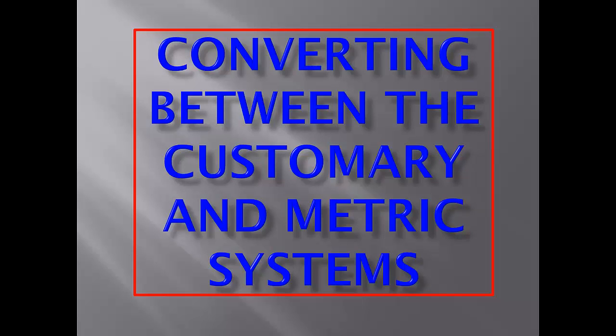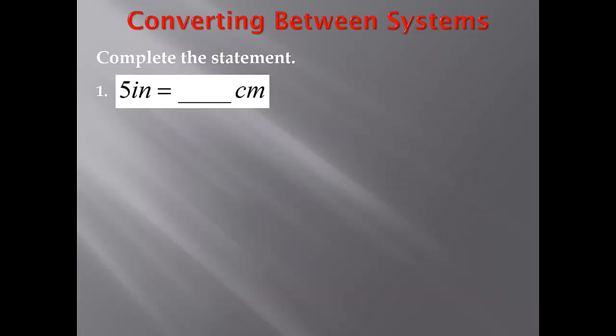Today's lesson is on converting between the customary and metric systems. We're going to complete the statement. For number one, we have five inches equals blank centimeters. In order to convert this, we need to know our conversion factor.